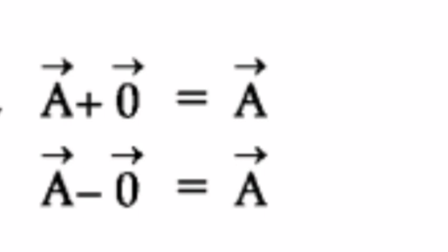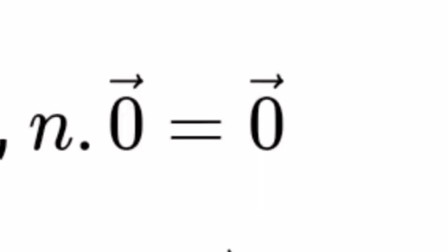That is, a⃗ + 0⃗ = a⃗; a⃗ - 0⃗ = a⃗. 2. The multiplication of zero vector by a non-zero real number is again the zero vector. That is, n · 0⃗ = 0⃗.